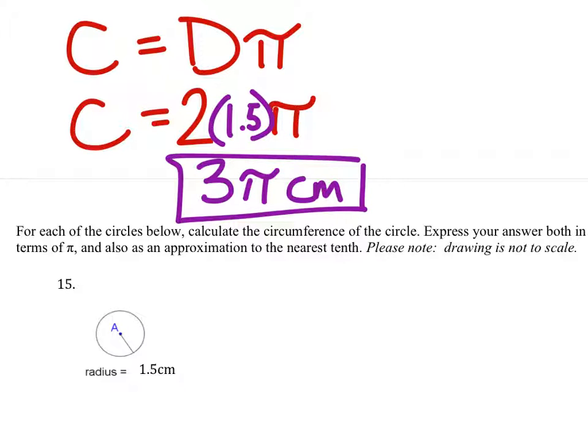And then the approximation is where I multiply 3 times pi, which I can do on a calculator, and I would get 9.4. Well, it did say round to the nearest tenth, so we're just going to keep it there.